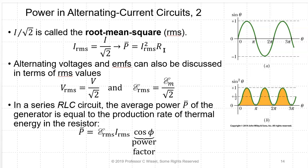This applies to alternating voltages, EMFs, and currents. Anytime you have a peak value and want the RMS, you divide by the square root of two, or equivalently multiply by 0.707. One over the square root of two is 0.707, and the square root of two is 1.414. The RMS value of anything is the peak divided by the square root of two.